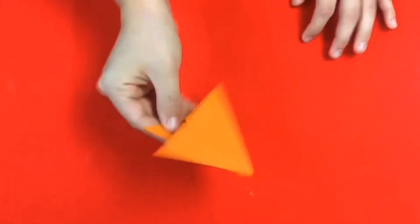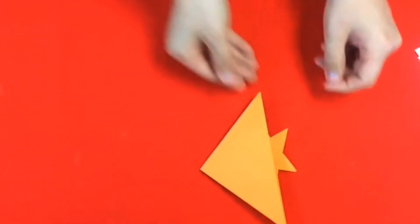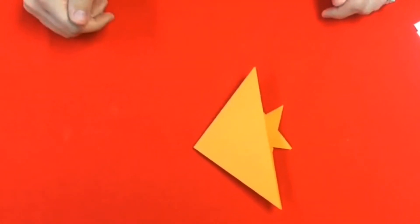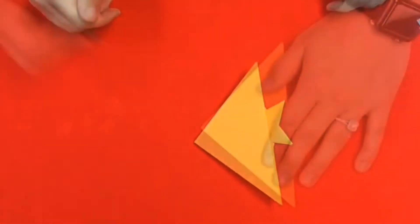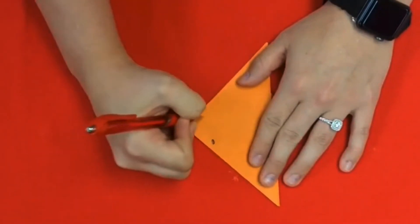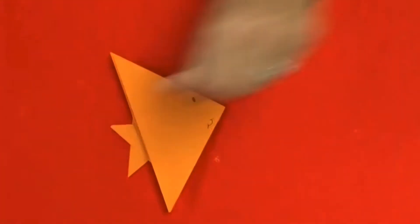Now you can flip it over and you can see that you have a fish. Feel free to draw a face on your fish to add a little bit of creativity. Now I'm going to draw my face on my fish. And here is my fish.